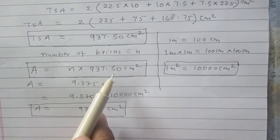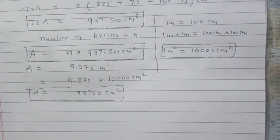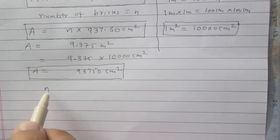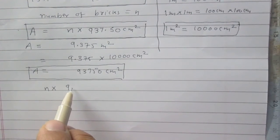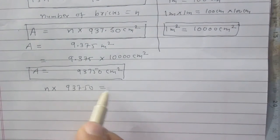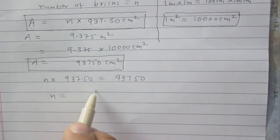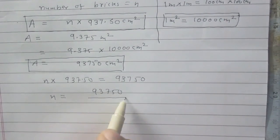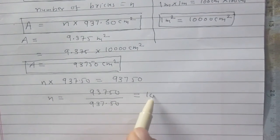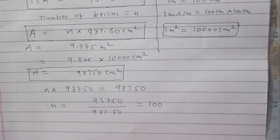According to our calculation and the given information, these two quantities must be equal. So n × 937.50 = 93,750. Therefore n = 93,750 ÷ 937.50 = 100. The maximum number of bricks that can be painted is 100.